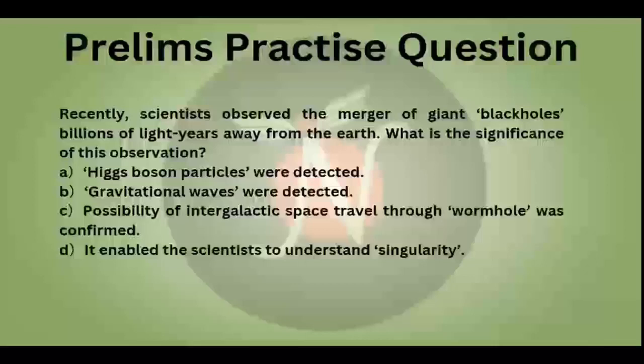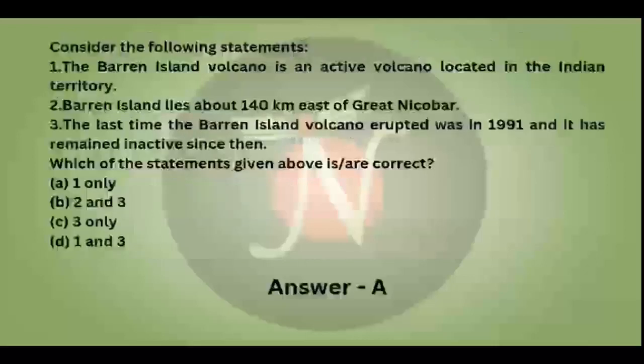I will answer this question in my next video. Moving to yesterday's question — it asked to consider the following statements: 1. The Barren Island volcano is an active volcano located in Indian territory. 2. Barren Island lies around 140 km east of Great Nicobar. 3. The last time Barren Island volcano erupted was in 1991 and it has remained inactive since then. The correct answer is A — only one statement is correct.